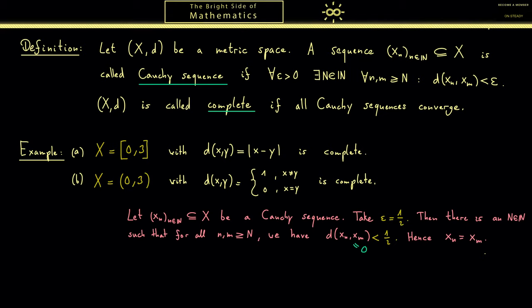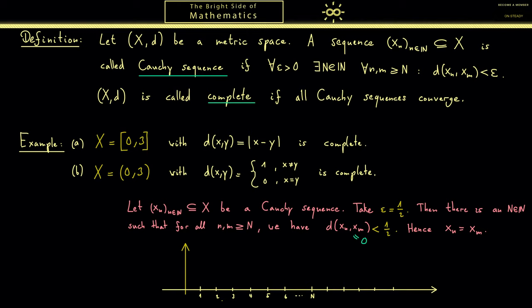Okay, maybe let's look at the graph where we have here the indices and here the space X. At the beginning the sequence is allowed to do something. However, the value it reaches with the index N is then fixed for the entire time of the sequence.